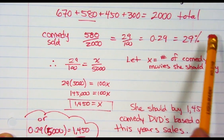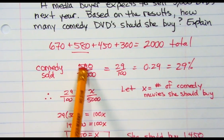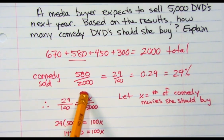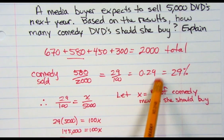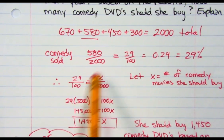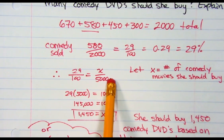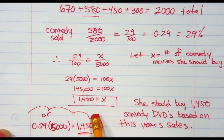But notice what I did. I figured out how many I sold out of the year, 580 out of 2,000. That was my experimental probability. And then I used that probability to estimate what in theory should be for 5,000. So in theory it should be 1,450.